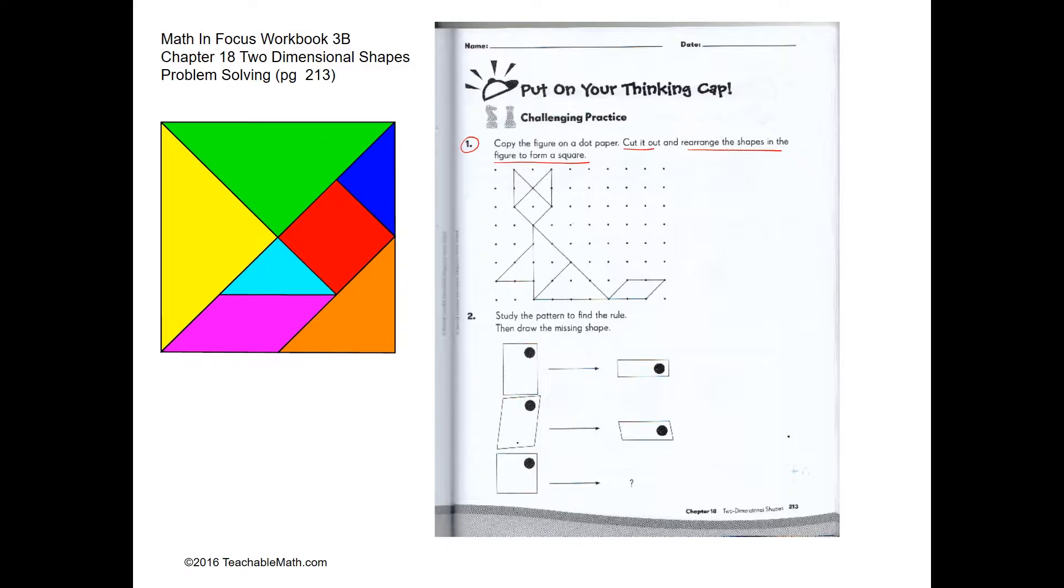So over here we have a little cat formed by tangrams. So if we have one and two over here, this will be one and this will be two.